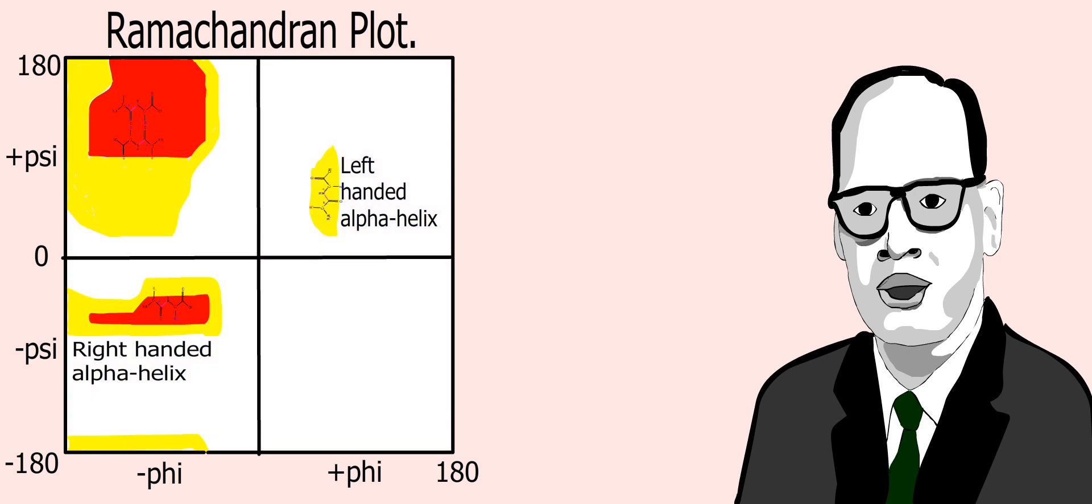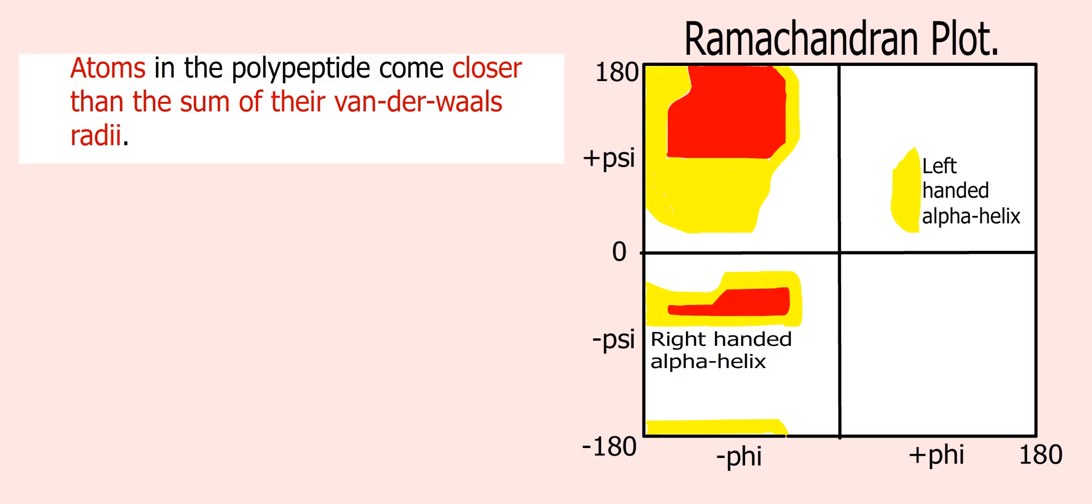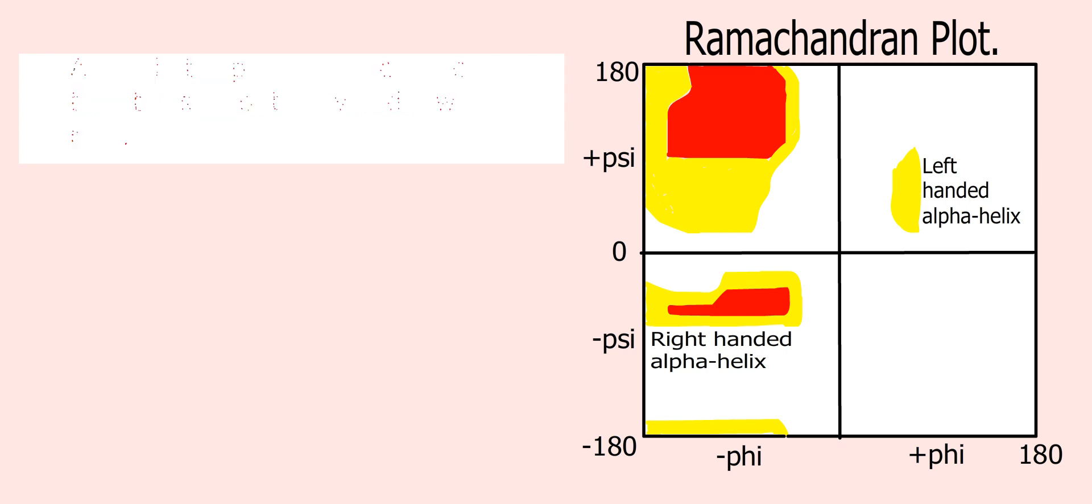Phi and psi angles which cause atoms to collide correspond to sterically disallowed conformations of the polypeptide backbone. In the diagram, the white areas correspond to conformations where atoms in the polypeptide come closer than the sum of their van der Waals radii. These regions are sterically disallowed for all amino acids except glycine.